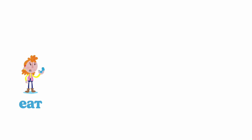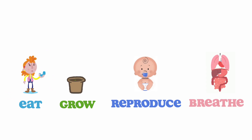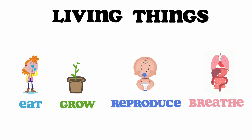All of those things — people, trees and plants, animals, bugs and insects — all eat. They grow. They reproduce. And they breathe. That's why they are called living things.